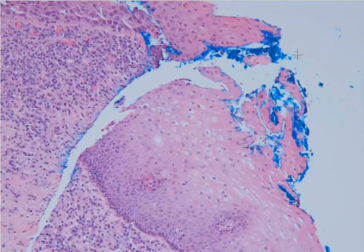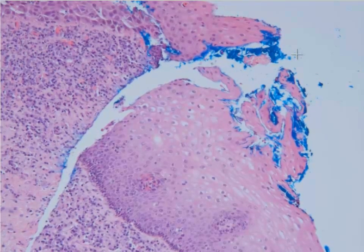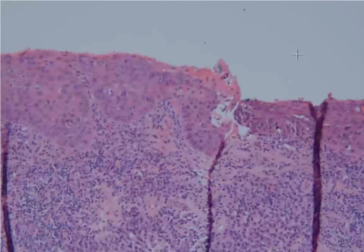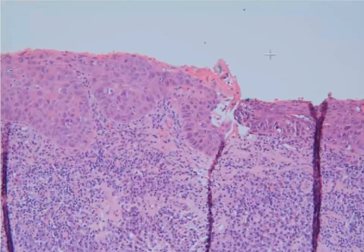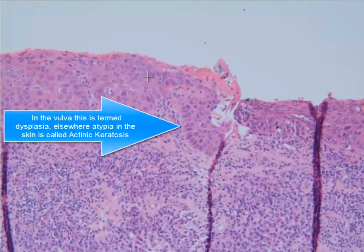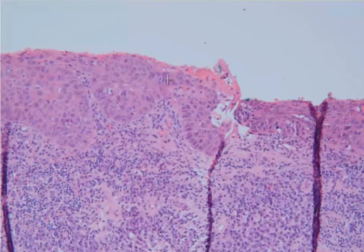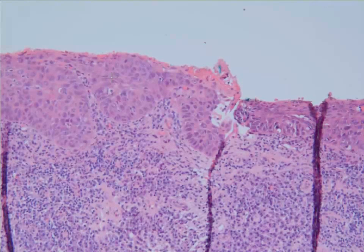You can see a little blue ink that we use to mark the edge of the specimen. Moving towards the tumor, you'll see a little bit of atypia. This is actually vulvar skin, so this is what we would call dysplasia. Actinic change is similar to that in non-mucosal skin — if you had a squamous cell on your arm, you might see actinic change related to sun exposure or other contributing factors.